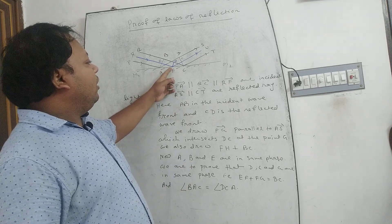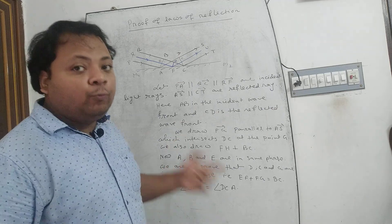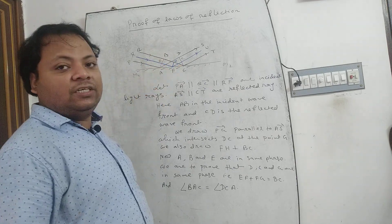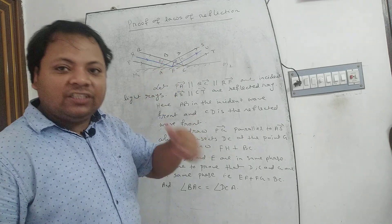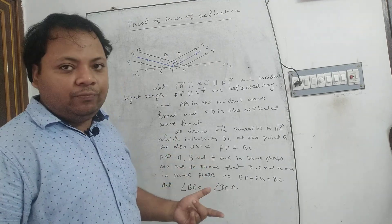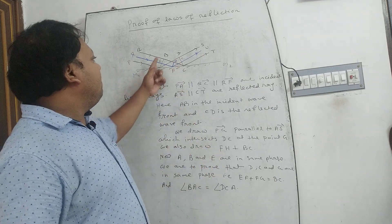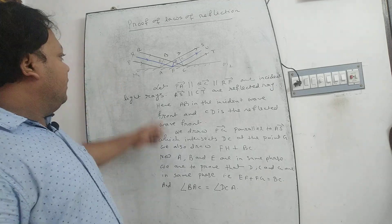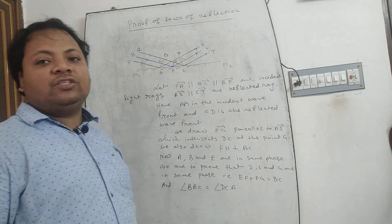We draw FH as a normal to BC. Therefore, we have to prove that EF + FG = BC. That is, the light covers the distance BC in time T, which equals the light covering distance EF + FG in the same time duration T — meaning D, G, and C are in the same phase. Points A, B, and E are in the same phase. And the angle BAC is equal to angle DCA — that is, the angle of incidence is equal to the angle of reflection.